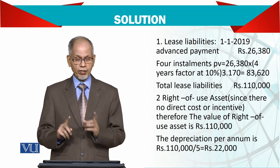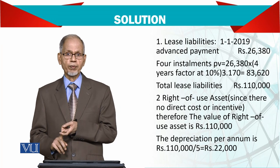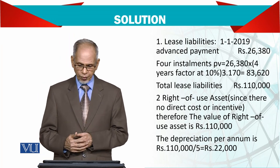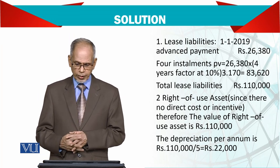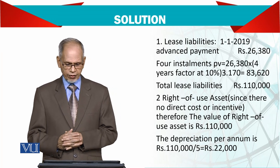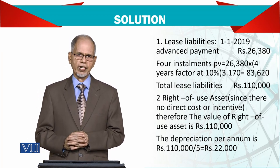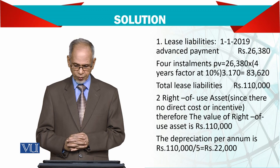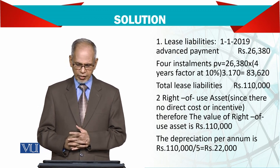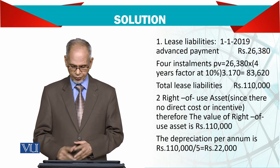This total becomes our right-of-use asset. Sometimes the asset value is given directly, and sometimes we need to work it out. Since there are no initial direct costs or lease incentives, the right-of-use asset is 110,000. Depreciation per annum will be 110,000 divided by 5, which is 22,000.